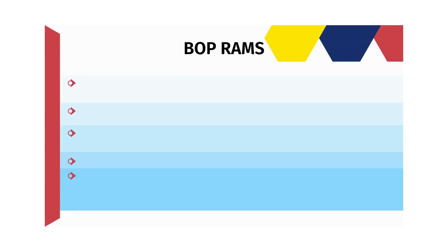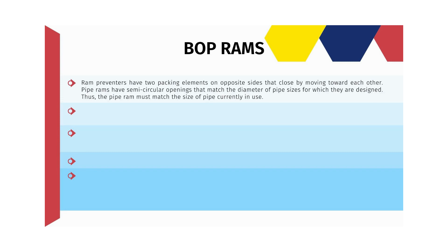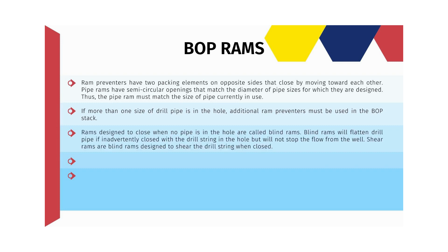Ram preventers have two packing elements on opposite sides that close by moving towards each other. Pipe rams have semi-circular openings that match the diameter of pipe sizes for which they are designed; thus the pipe ram must match the size of pipe currently in use. If more than one size of drill pipe is in the hole, additional ram preventers must be used in the BOP stack. Rams designed to close when no pipe is in the hole are called blind rams. Blind rams will flatten drill pipe if inadvertently closed with a drill string in the hole, but will not stop the flow from the well.